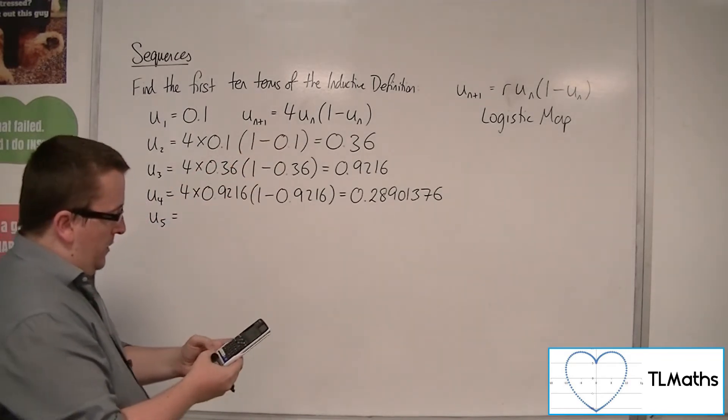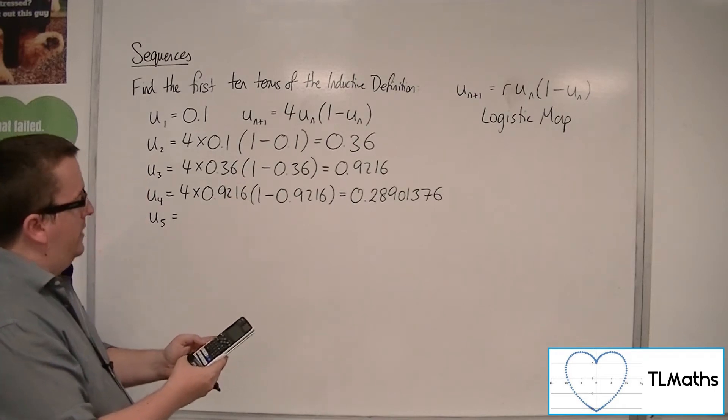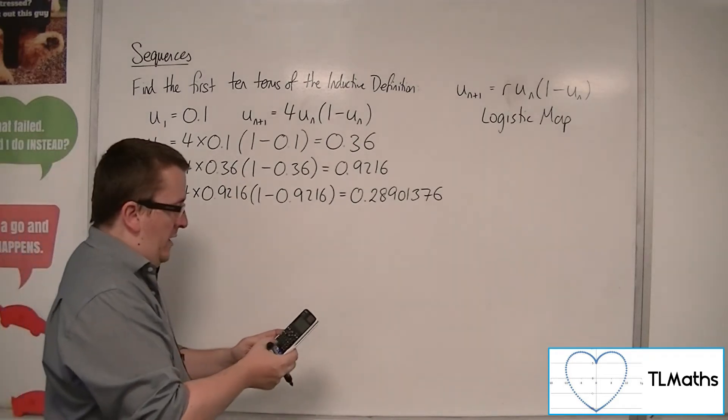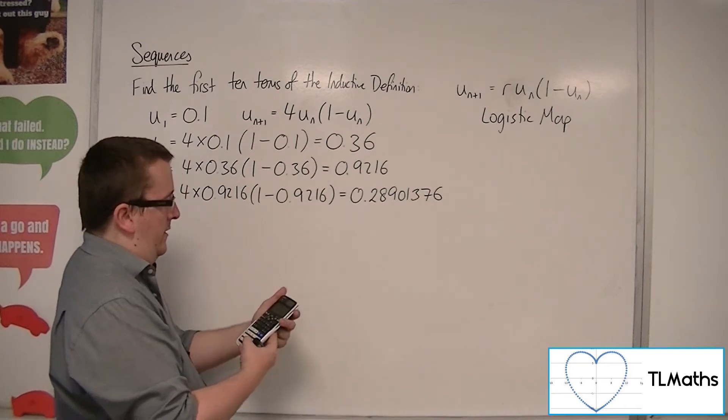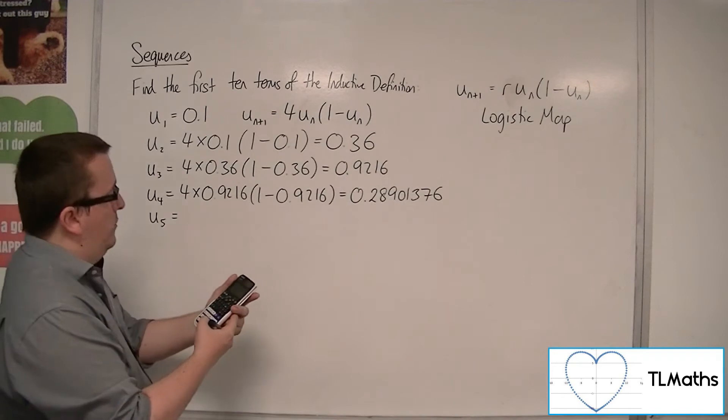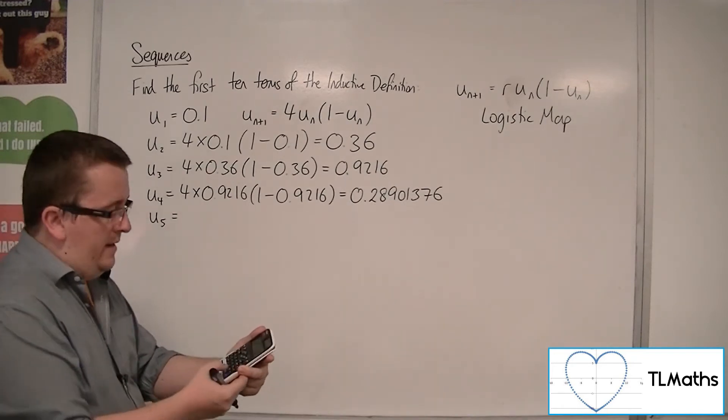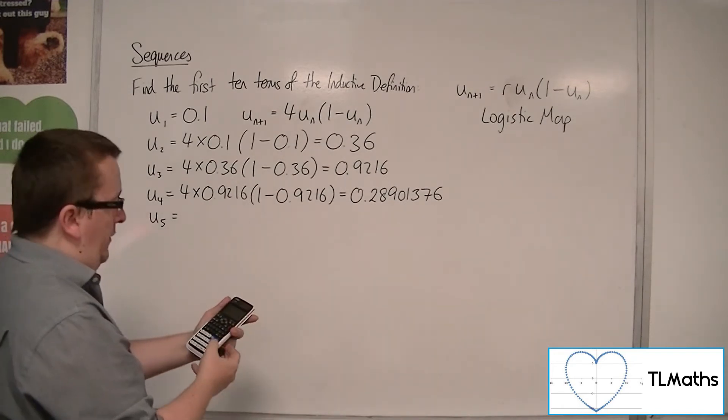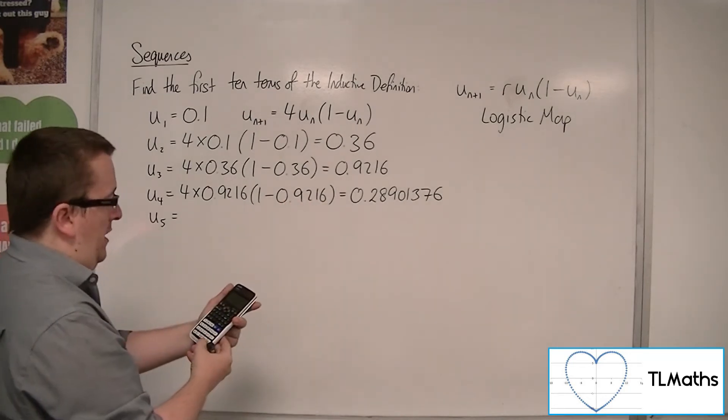Then type in 4 times the answer key, times by open bracket 1 minus the answer key, and then press equals, and it will give you the next term 0.36. Press equals again, it will give you the 0.9216. Press equals again, we get the next term.